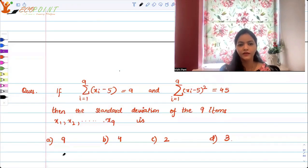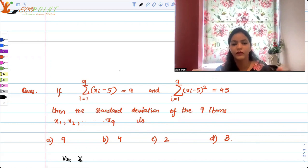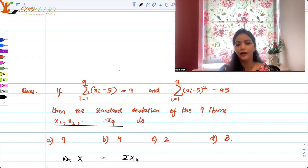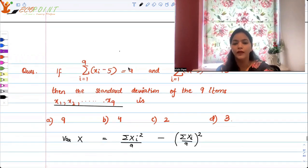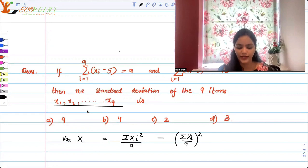Now, what is standard deviation? Standard deviation is the square root of variance. So if you want to find out variance of these observations x1 to x9, that would be [summation(xi²)/9] minus [summation(xi)/9]² whole squared. This is what variance is, and then your standard deviation is the square root of variance.